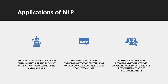Content analysis and recommendation systems are another area where NLP has made substantial contributions. These systems analyze user data, preferences, and behavior to provide personalized content recommendations. NLP is used to understand and categorize content — whether it's text, audio, or video — enabling these systems to match user interests with relevant recommendations. This technology is widely used in streaming services, e-commerce platforms, and social media, enhancing user experience by offering tailored content suggestions, product recommendations, and targeted advertisements.